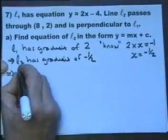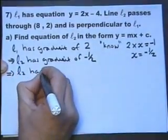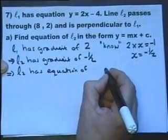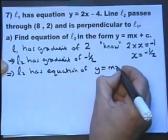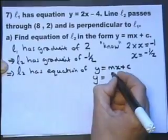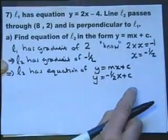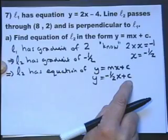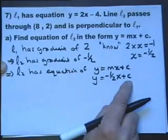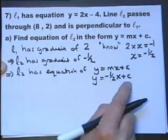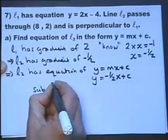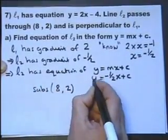So now we can say, right, L2 has an equation of y equals mx plus c, because that's any straight line. But we now know the gradient of this second line is minus a half. So our job now is to find out the value of c. Where does this second line pass the y-axis? Well, to do that, we can find the value of c by substituting any coordinate that it passes through. Any coordinate that this line passes through. And we're told that it passes through the coordinate 8, 2. So let's substitute the value of x is 8, y is 2 into this.